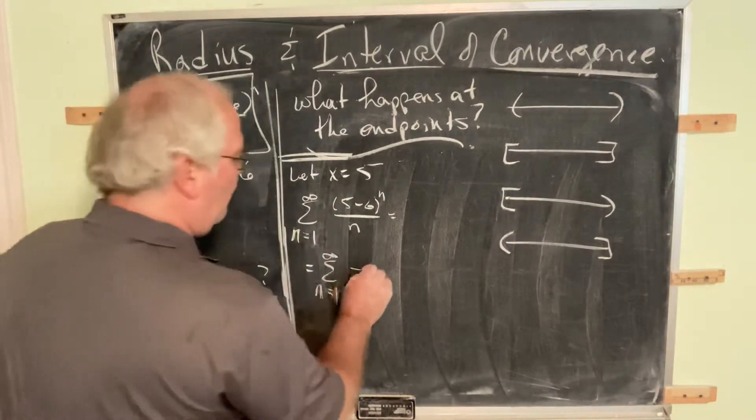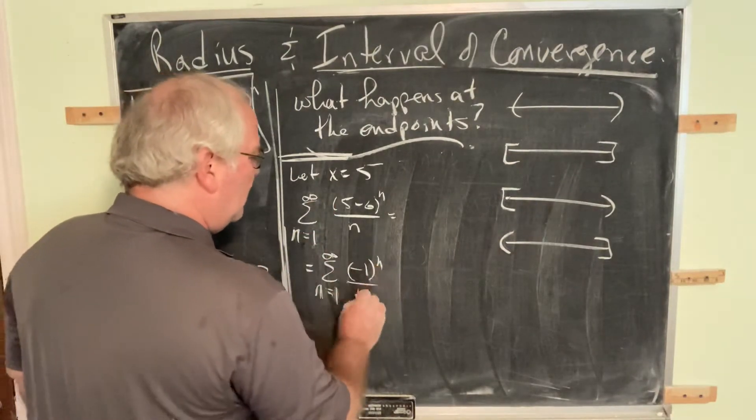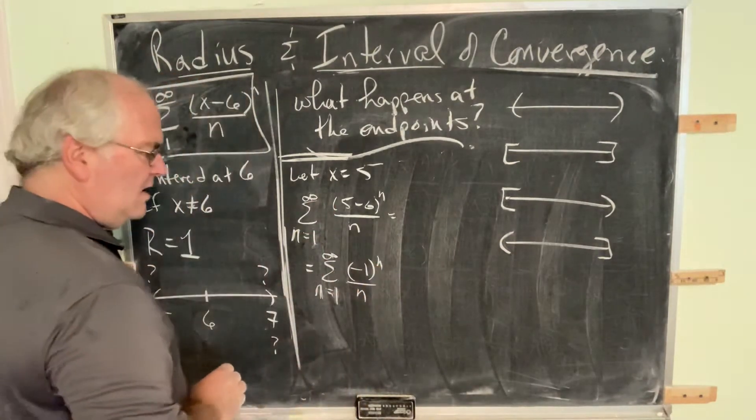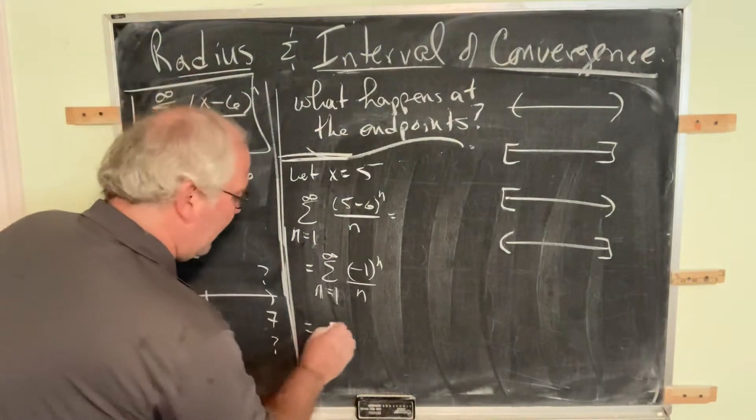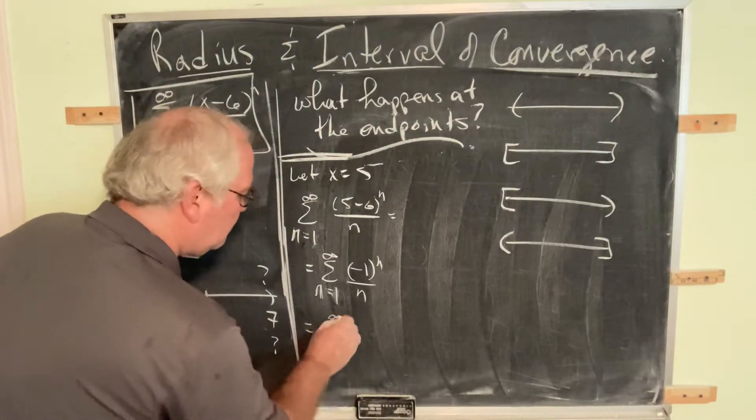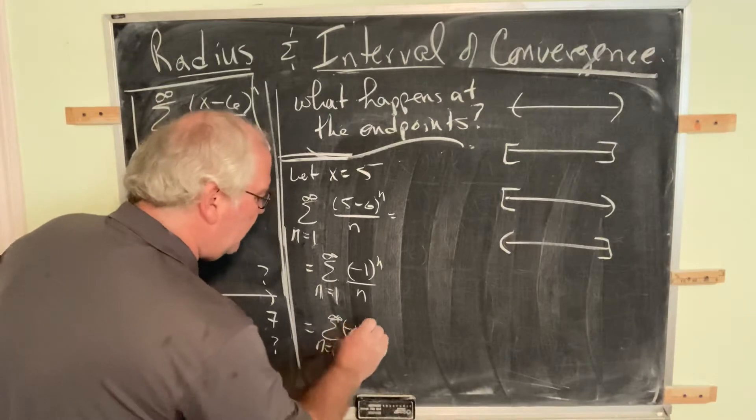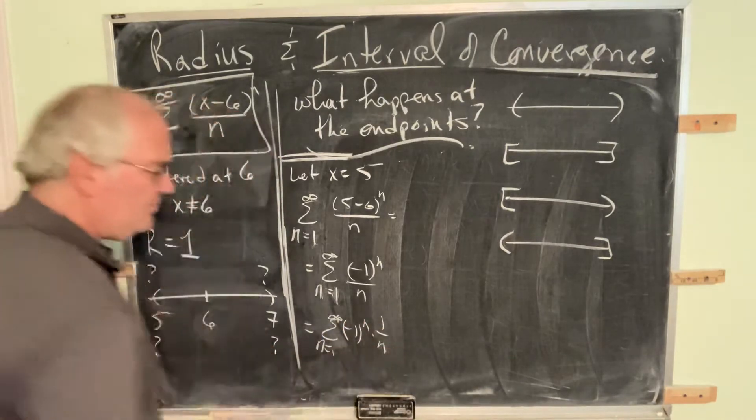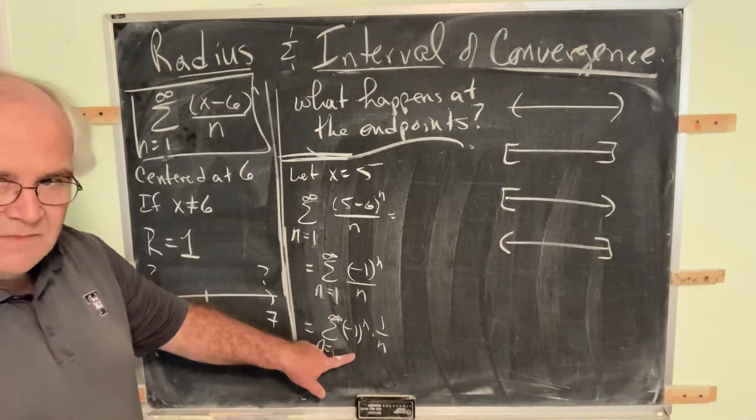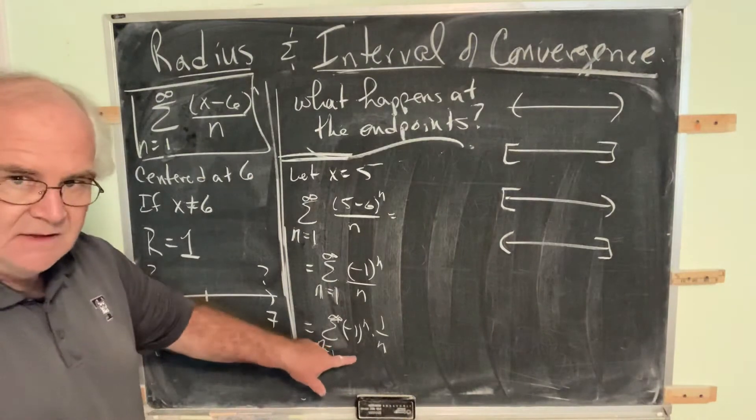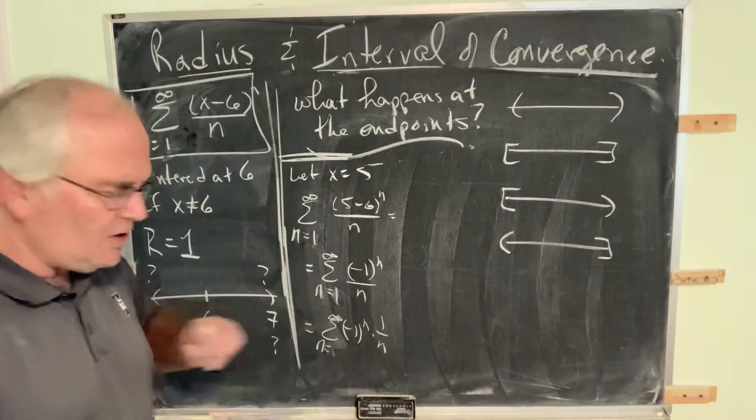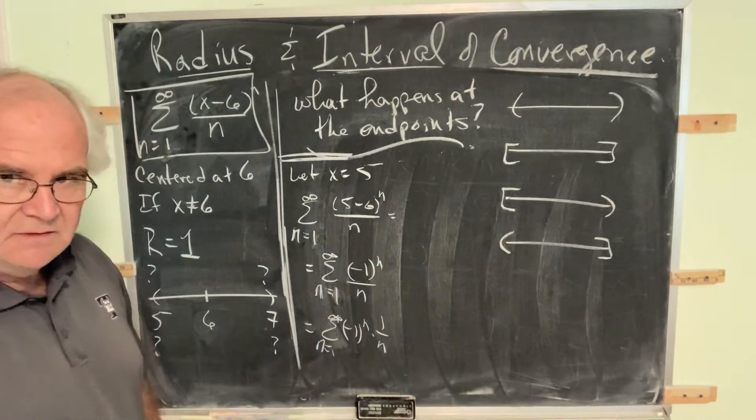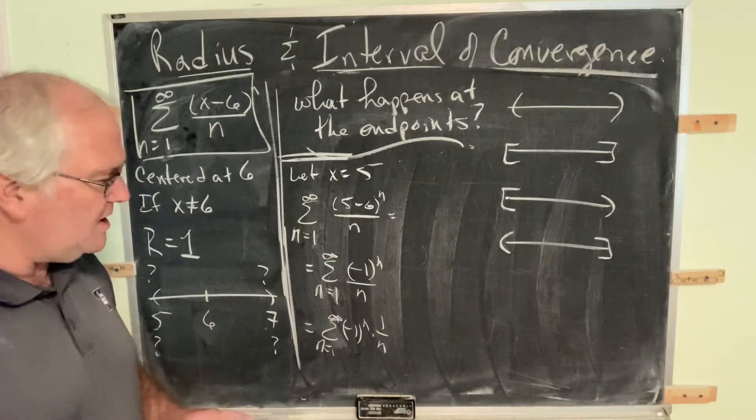So what do we have here? This is (-1)^n over n. Or we can think of that as (-1)^n times 1/n. What is that? We know what that is. That's the alternating harmonic series. And we know the alternating harmonic series converges.